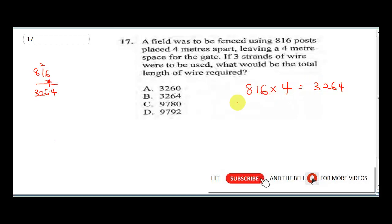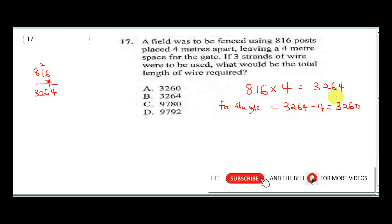Now remember, they said leaving a four meter space for the gate. So for the gate, I'm going to subtract 4 meters. That would be 3264 minus 4, which gives me 3260.